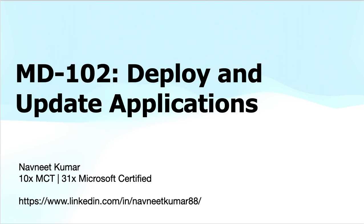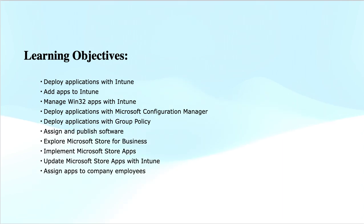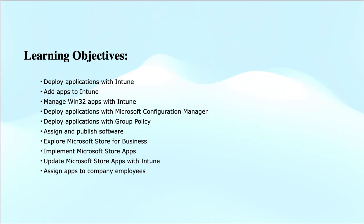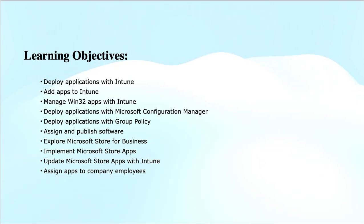This module is about deploying and updating applications. The module objectives are: Deploy Applications with Intune, adding applications to Intune which is the first process of the Application Lifecycle Management, then deploy and configure these applications, Manage Win32 applications with Intune, Deploy Applications with Microsoft Configuration Manager, and Deploy Applications with Group Policy.